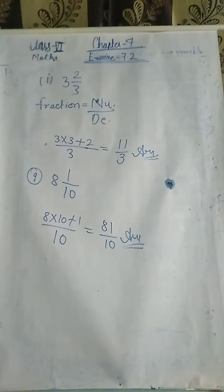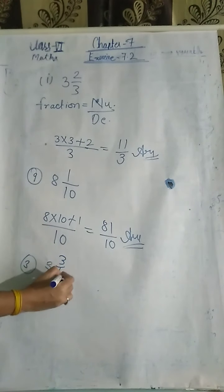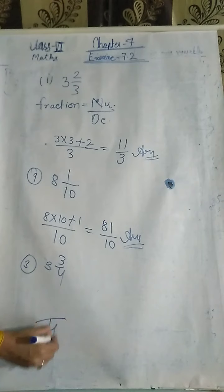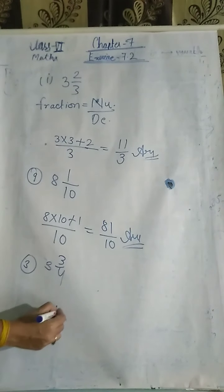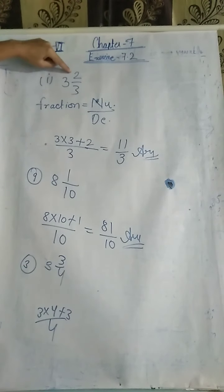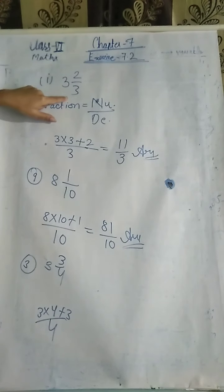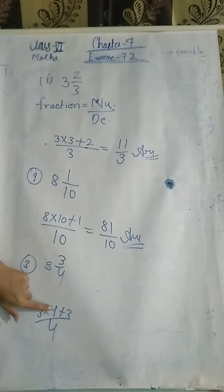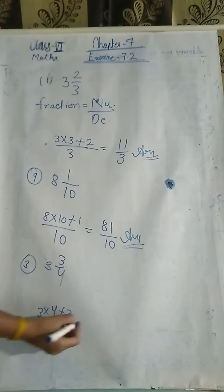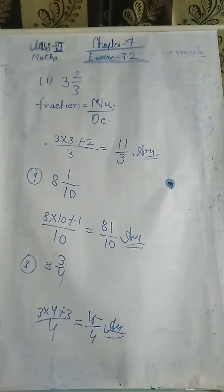Denominator stays the same. Numerator: 3 into 4 plus 3. That value here you add, and the value here you multiply. 4 threes are 12, plus 3 gives 15 upon 4. That is your answer. Did you understand?